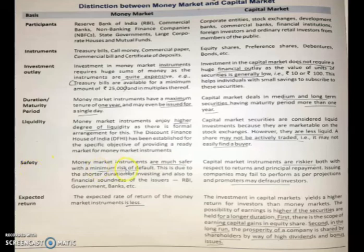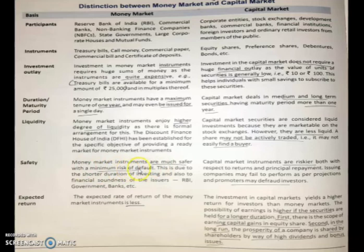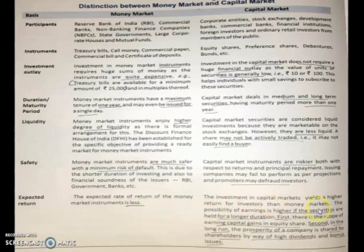Regarding safety, money market instruments are much safer with minimum risk of default, because the parties involved — such as RBI, government, and banks — have a strong financial background. Capital market instruments are riskier both with respect to returns and principal payment. Regarding expected returns, the expected rate of return of money market instruments is less because of the short-term nature. The investment in capital market yields a higher return for investors than money markets. These are the main differences between money market and capital market.